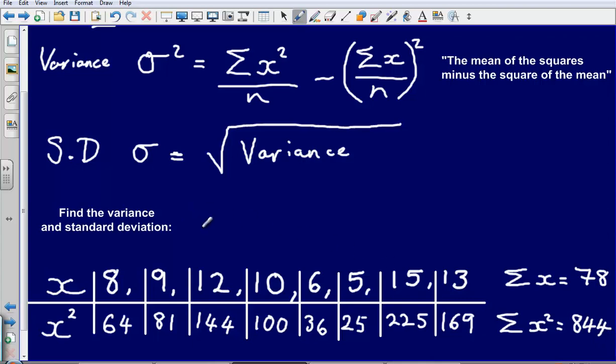So now we have calculated these, we can simply input these into our formula. So let's do that. So our variance, sigma squared, is going to be 844 divided by the number of values I've got. So how many values have I got?